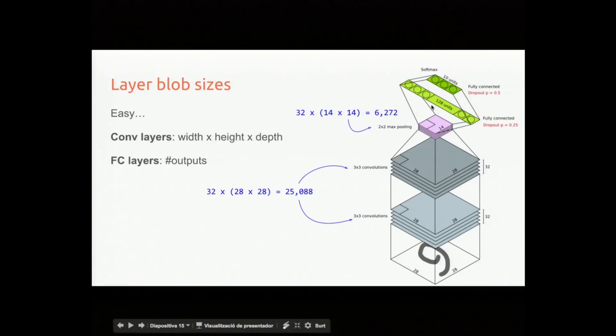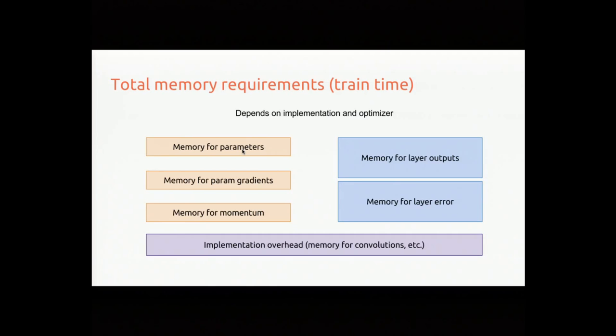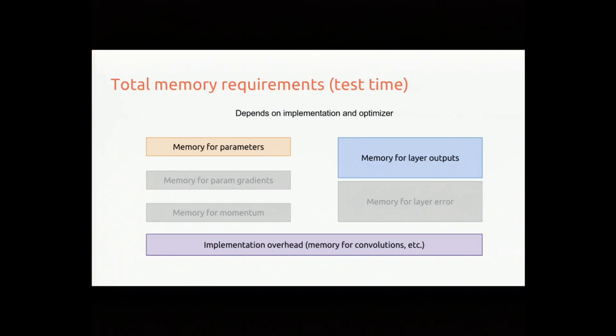When training, memory breaks down into several components. Memory for parameters — typically multiplied by three if using momentum, covering parameters, parameter gradients, and momentum parameters. You also need the same amount for layer outputs and for the error signal, which are the same size (shown in blue). Plus whatever overhead your library requires. When doing only forward inference, the gradient-related memory goes away, and you should be able to quickly estimate your network's memory usage.